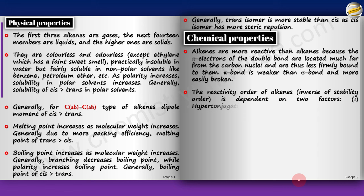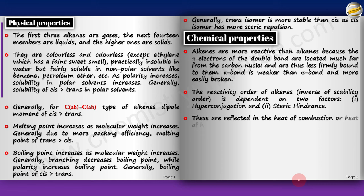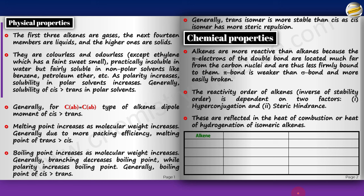The reactivity order of alkenes is inversely related to stability. More hyperconjugation implies the alkene is more stable and less reactive. Greater steric hindrance makes the alkene more unstable and more reactive. These are reflected in the heat of combustion and heat of hydrogenation of isomeric alkenes. For example, isobutene is the most stable among all butenes because it has six hyperconjugated structures — CH3 C(CH3) double bond CH2 — and all six hyperconjugation structures make isobutene most stable.